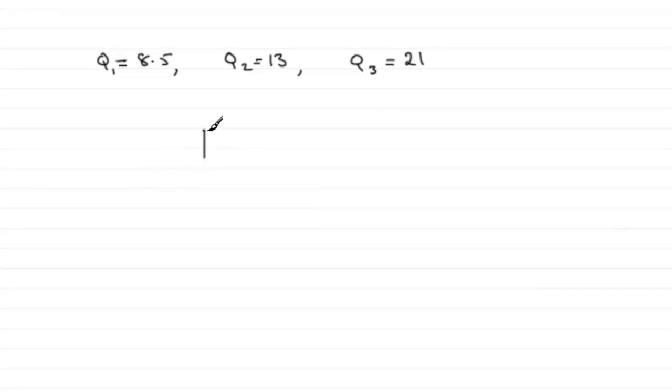By relating this back to a box and whisker plot. Remember that if you've got a box plot, we have our quartiles. This would be the lower quartile Q1, the upper quartile here Q3, and we'd have our whiskers out the sides here.